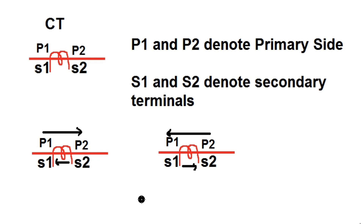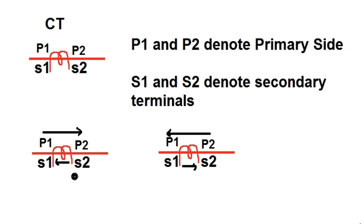So what is meant by CT polarity? A CT has two terminals. On the primary side we have P1 and P2, and on the secondary side there are two terminals S1 and S2. P1 and P2 denote the primary or HV side of the CT, and S1 and S2 denote the secondary or LV side. If current flows from P1 to P2 on the HV side, current will flow from S2 to S1 on the secondary side. Conversely, if current flows from P2 to P1, the secondary current flows from S1 to S2. This is the general convention of the current transformer.